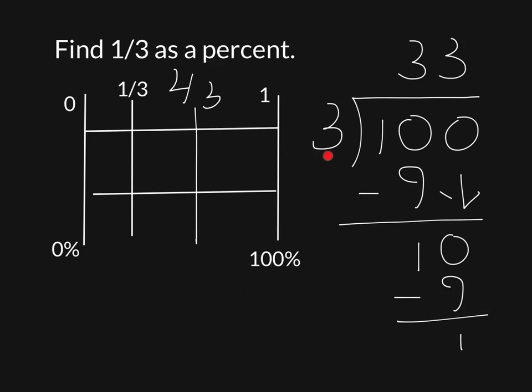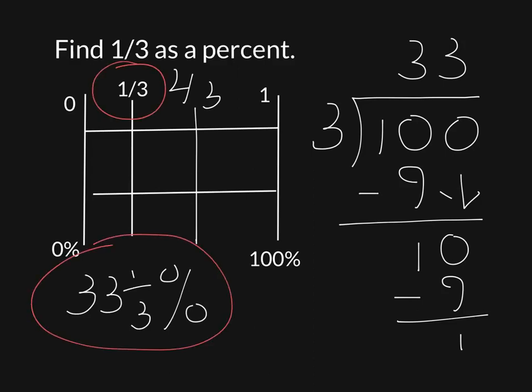We're going to take what we have here and write this as a mixed number. However, so the way we're going to do this is we're going to write our one-third as the following: 33 and one-third percent. In other words, one-third as a percent is 33 and one-third as a percent.